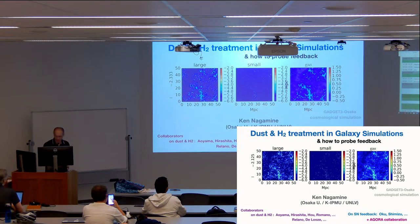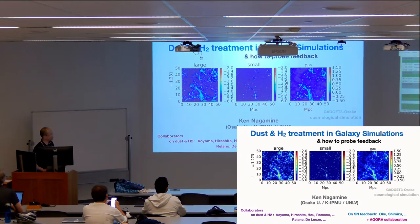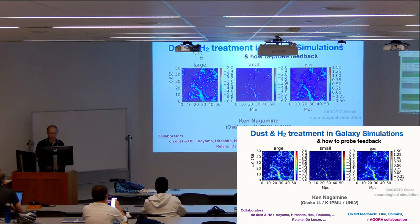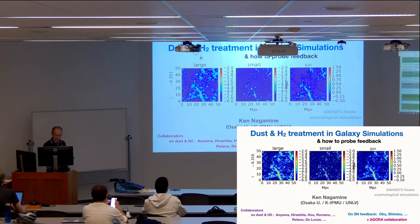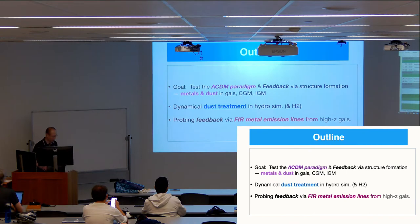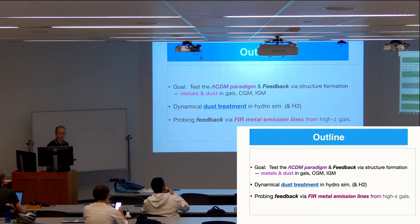Nice to see you all. I'll talk about dust and H2 treatment in galaxy simulations and how to probe feedback with these collaborators. Our goal is very simple: I like to test lambda CDM paradigm and feedback models via structure formation. To do that, looking at metals and dust distribution in galaxies, CGM, and IGM is a good way. First I'll talk about dynamical treatment of dust in hydro simulations, a bit of H2, and then later if I have time I'll talk about probing feedback via fine lines as well, which is observed by ALMA recently.